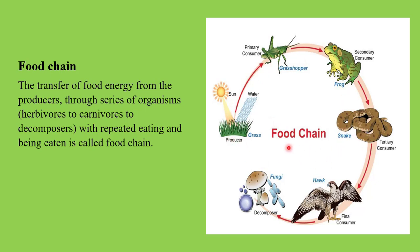So what is simply the food chain? It is the process through which transfer of food energy is happening through different organisms, with repeated eating and being eaten. For example, the grasshopper eats the grass, but the grasshopper itself is being eaten by another species — for example, the frog. That is what we mean by repeated eating and being eaten. That is the food chain — simply the transfer of food energy through a series of organisms with repeated eating and being eaten.